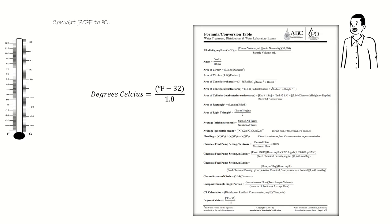Substituting our temperature in degrees Fahrenheit into the formula, degrees Celsius is equal to 75 minus 32, all divided by 1.8. 75 minus 32 is 43, and 43 divided by 1.8 is 23.888 repeating.